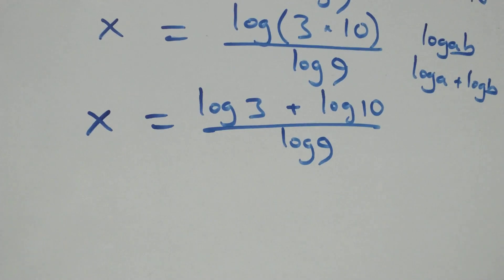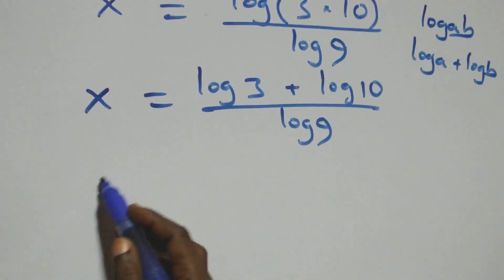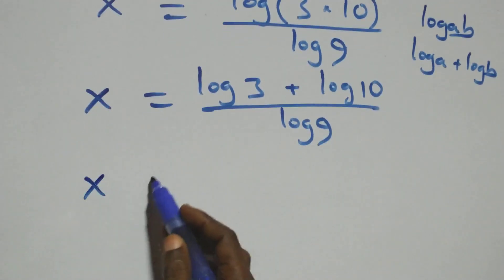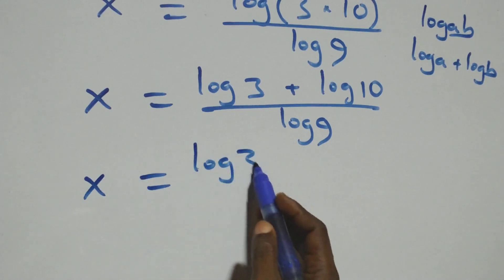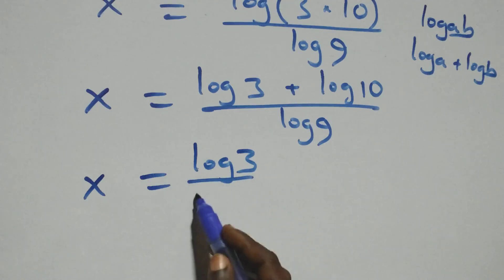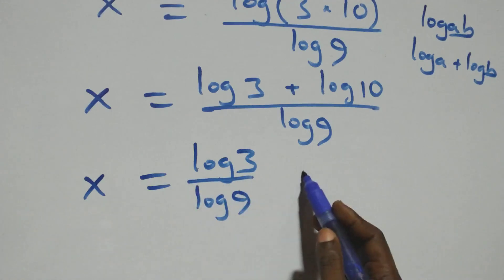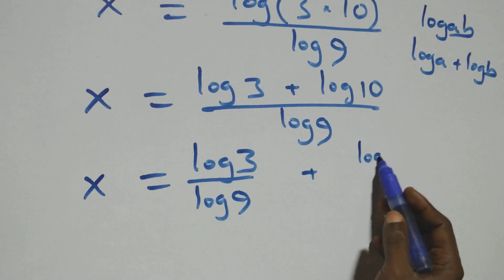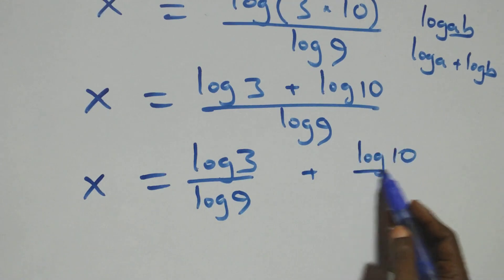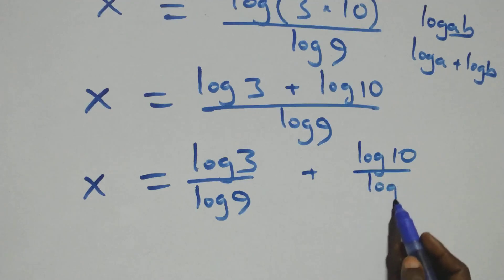Next, we separate this into two fractions and we have x equals log 3 over log 9 plus log 10 over log 9.